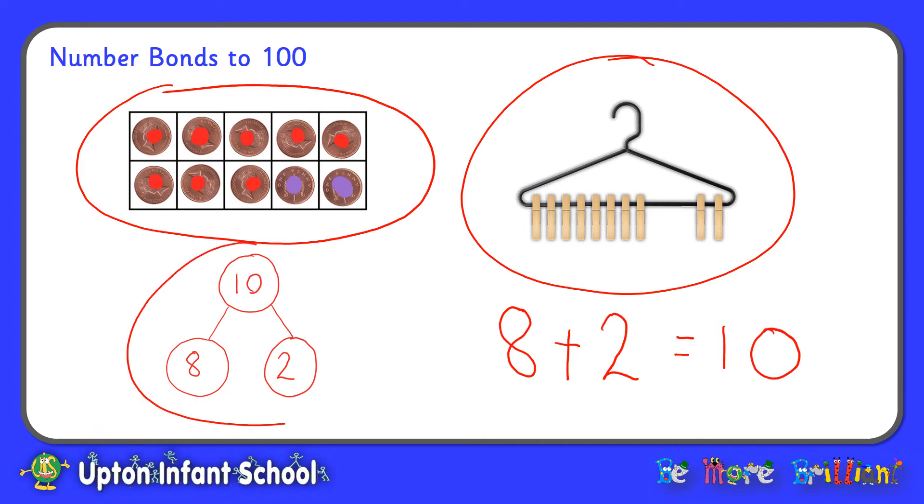Our third way is to use a part-part-whole diagram and again you can see here clearly that 8 and 2 together make 10. And finally we could represent our number bonds using a calculation or number sentence. 8 add 2 equals 10.